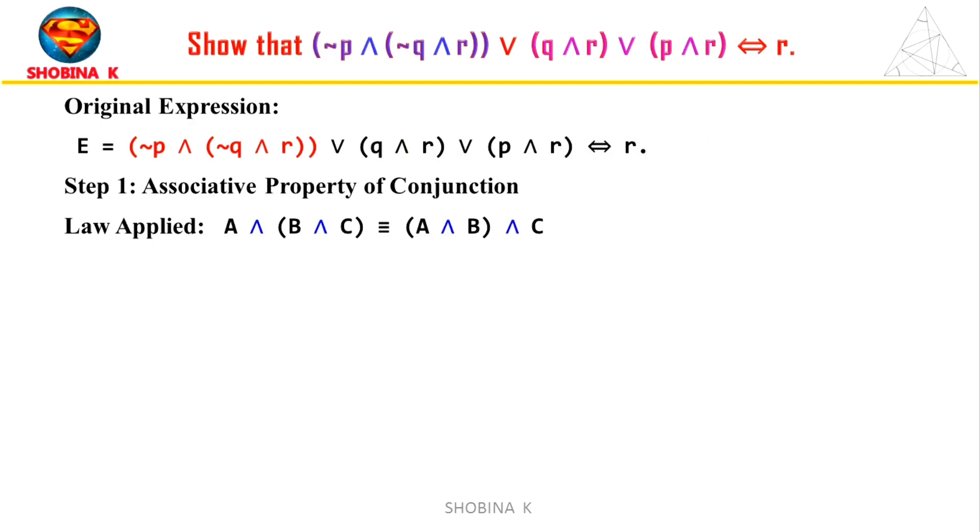First, we apply the associative property of conjunction. This law states that A and (B and C) is equal to (A and B) and C. A and (B and C) means A is true and both B and C are true. (A and B) and C means both A and B are true, then we check if C is true. This property allows us to rearrange the order of statements connected by AND without changing the overall truth of the expression.